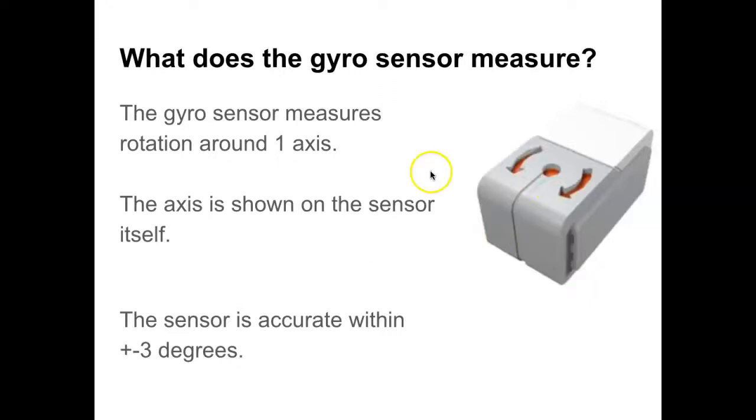What does the gyro sensor measure? It measures rotation around one axis. If you were to stick a pencil so its tip or eraser was touching that circle, that would tell you the axis around which the gyro sensor is measuring rotation. According to the documentation, the sensor is accurate within plus or minus three degrees.